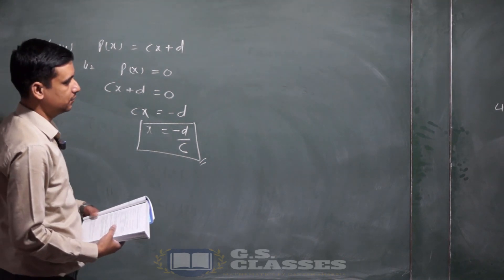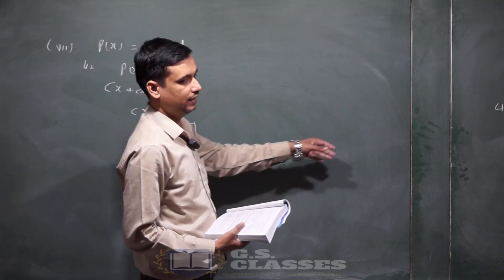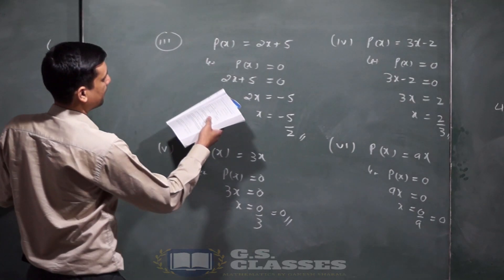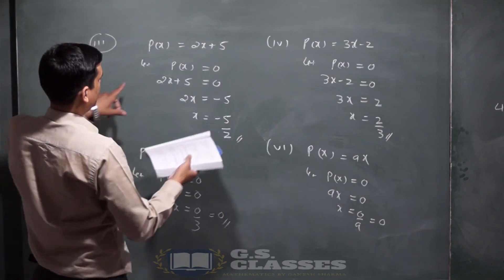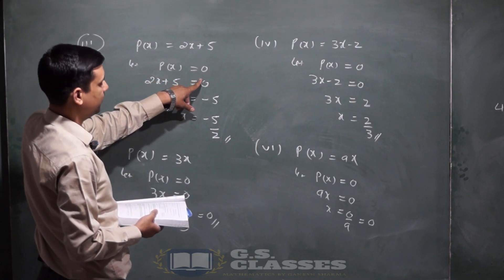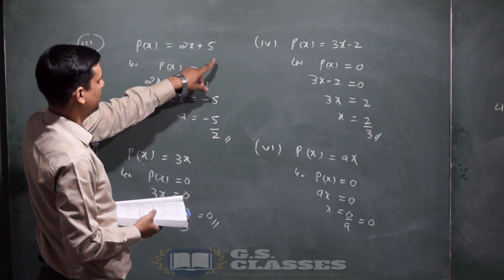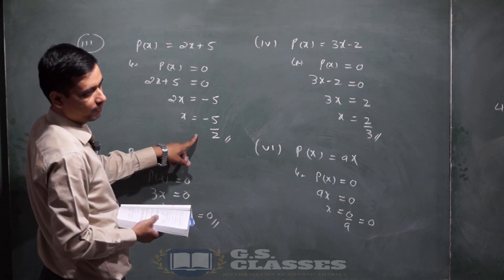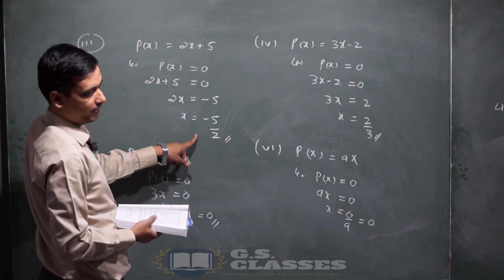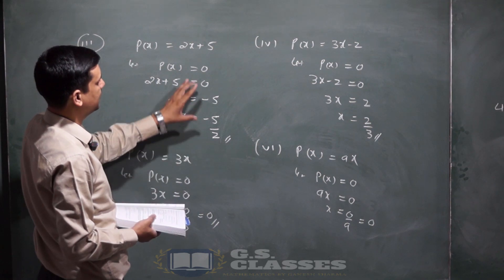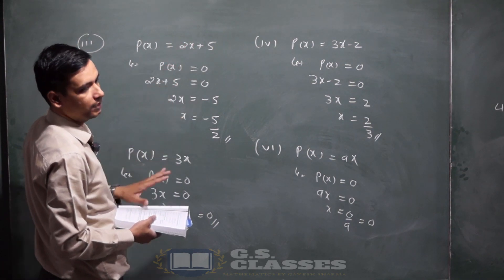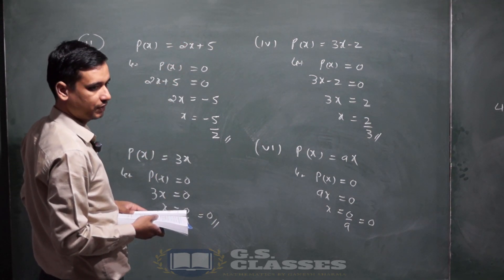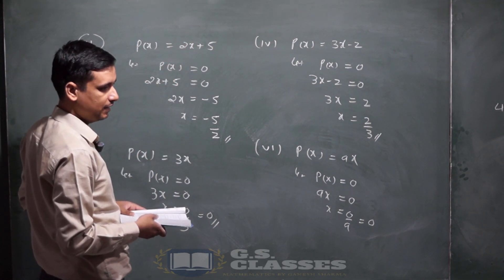Summary: इस तरह हम zeros निकालते हैं। सबसे पहले p(x) को 0 के equal let करना होता है, value put करनी होती है, और वहाँ से x की value निकालनी होती है। वो x की value जो polynomial का answer 0 बनाए, उसे उस polynomial का zero कहते हैं।